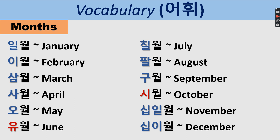For July (7th month) it's 칠월. August is 팔월. September is 구월. October is the same scenario as June — you say 시월, not 십월; drop the batchim. November is 십일월. December is 십이월. Remember: for June say 유월, and for October say 시월.